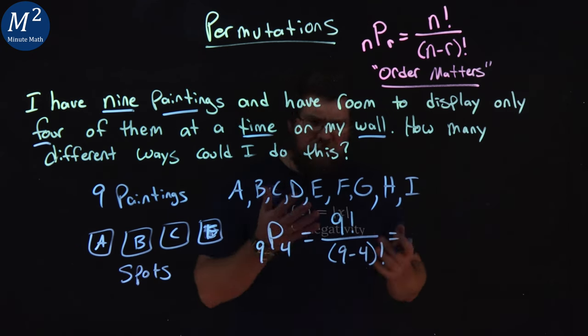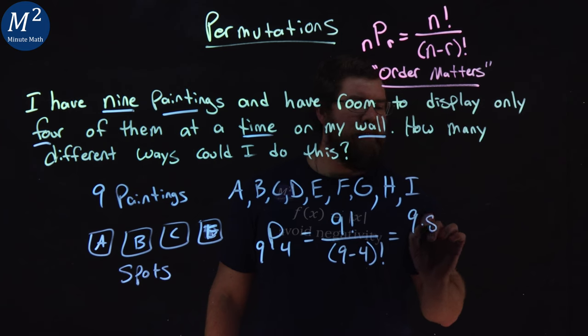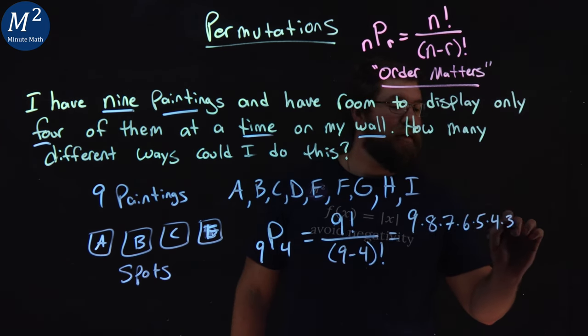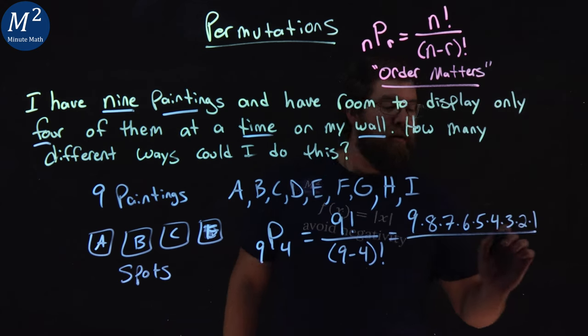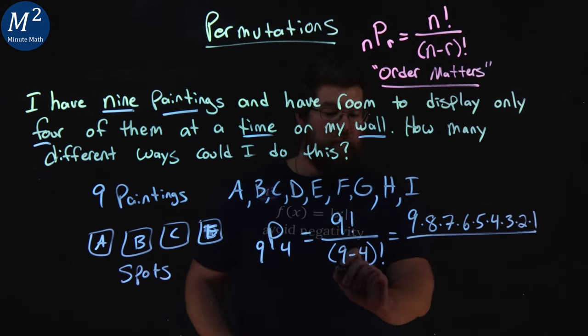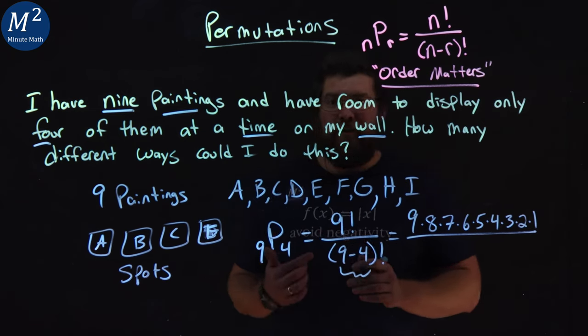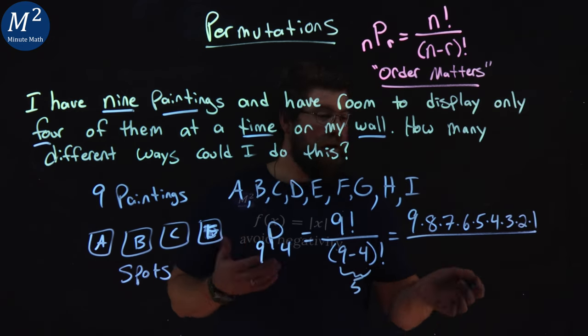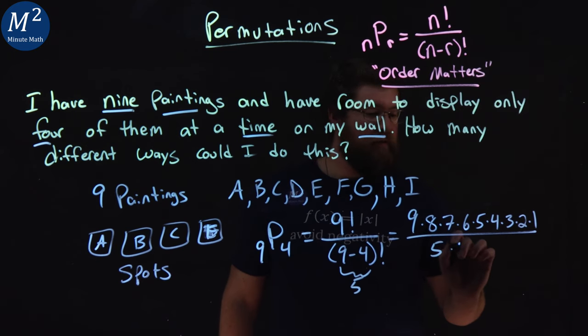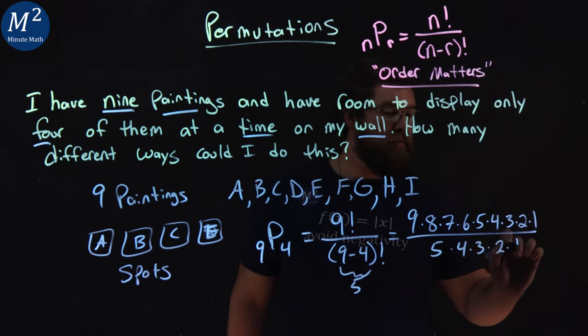Now, 9 factorial, visualize this out, is 9 times 8 times 7 times 6 times 5 times 4 times 3 times 2 times 1 over 9 minus 4, right? 9 minus 4 here. That's going to give us a 5. So we have a 5 factorial here. 5 times 4 times 3 times 2 times 1.